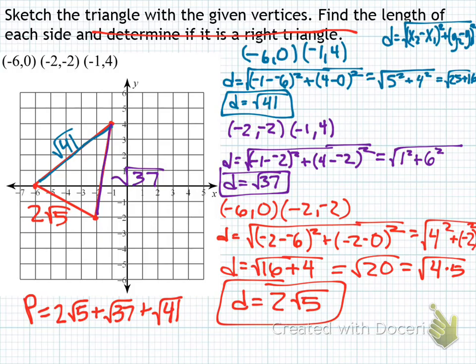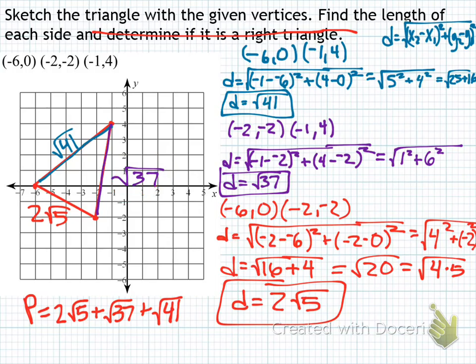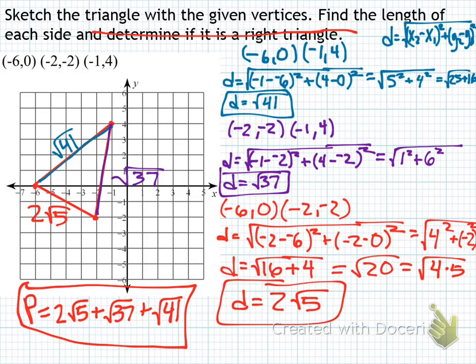We could also determine if this second triangle is a right triangle using the Pythagorean theorem. It doesn't really look like there's a right angle anywhere, but this one angle might be — so you'd use those two sides as legs and the other as the hypotenuse to check. For homework, there are two problems: for each set of vertices, graph the triangle, find the side lengths, find a decimal approximation of the perimeter, and determine if it's a right triangle. Really try your best to review these concepts for next week's quiz. Have a good weekend — see you Tuesday.